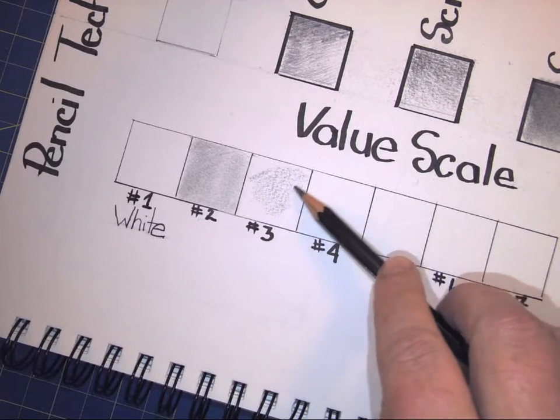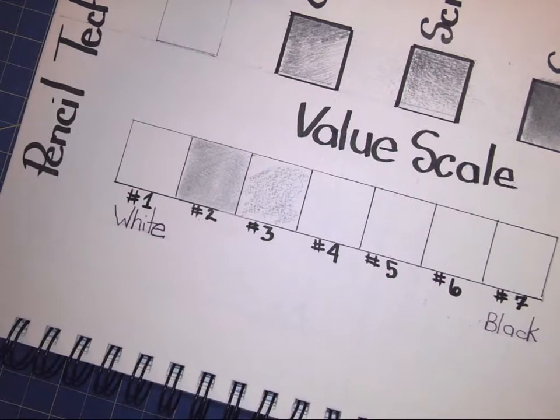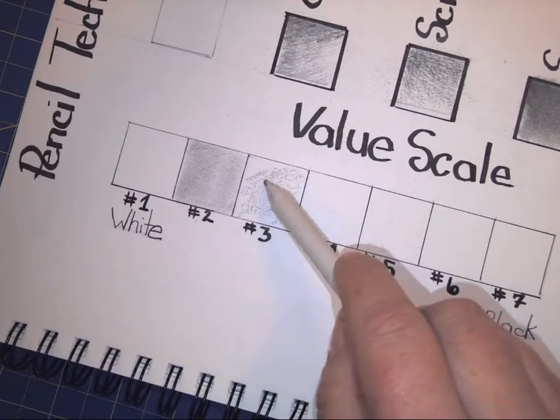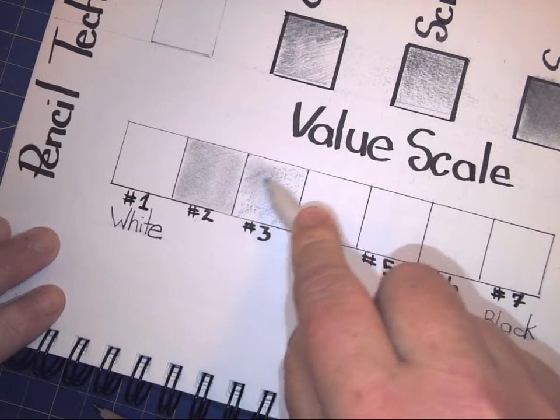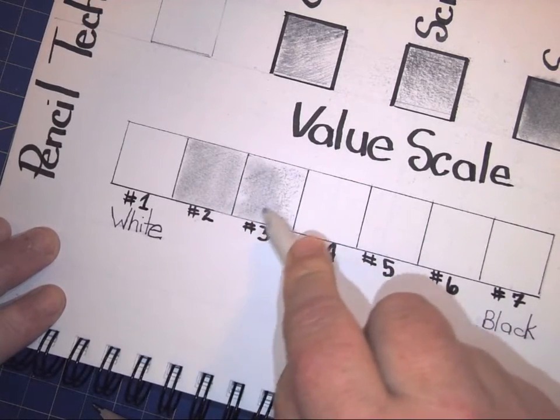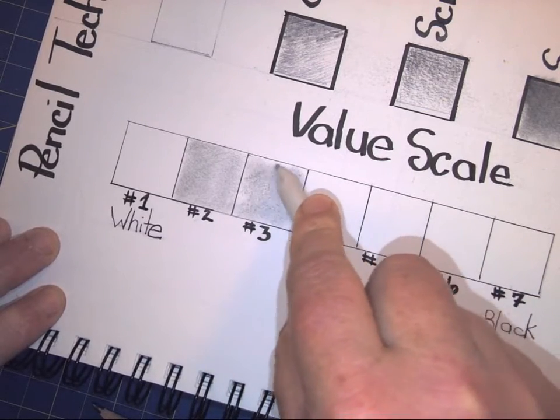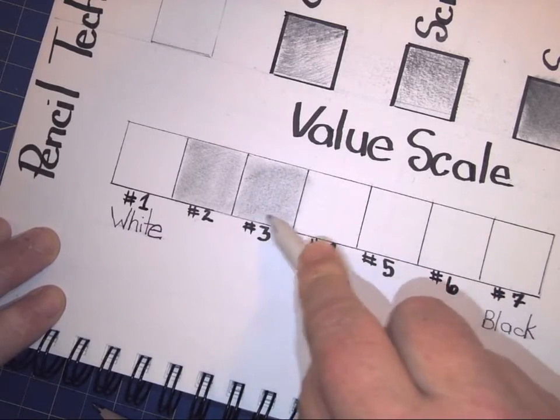So I've put down my graphite, and now I'm going to blend it in using a stomp. You can also do this using a Kleenex if you'd like. As I'm doing it, I'm also looking at the second scale or the second box to make sure that my number three is darker.